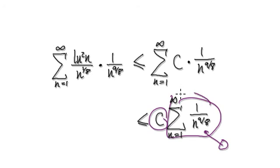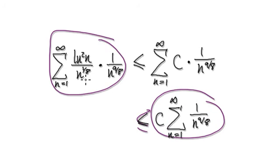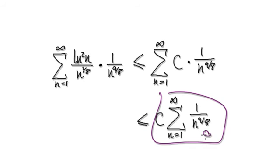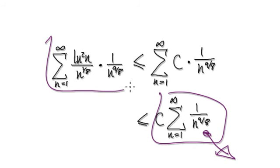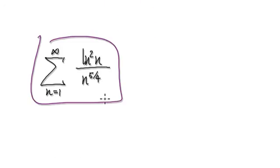This thing will converge times a constant, so the whole thing here will converge. If this expression is bigger or equal to our series term, then the series will have no choice but also to converge. Since the bounding series converges, therefore our original series will also converge.